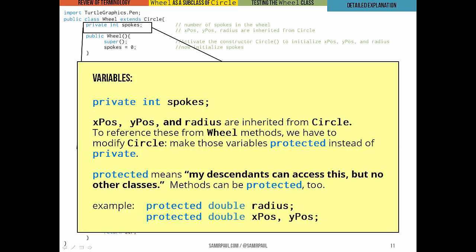If we look at the variables, variable spokes, which tells us the number of spokes in the wheel, that's the only variable that's declared in this class. The other variables, which are x position, y position, and radius, they're all inherited from Circle. But if we want to reference these variables in Wheel methods, we have to modify the Circle class just a little bit. In Circle, we have to declare those variables to be protected rather than private. This distinction basically just means that Circle's descendants, any class that's down below it in the class hierarchy. Circle's descendants can access those variables, but they're still hidden from all other classes.